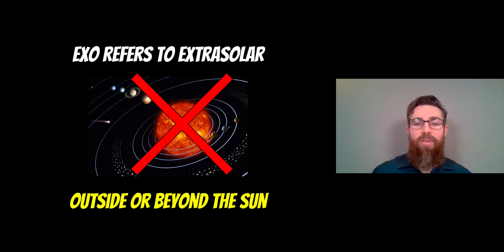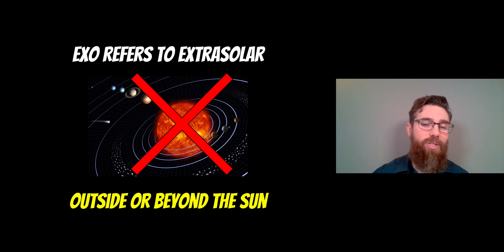So exo. When we put exo in front of planet, moon or ring, it means that it's extrasolar. And that means it's outside or beyond the sun. So it's an object orbiting a star that's not our sun. That's what it refers to.